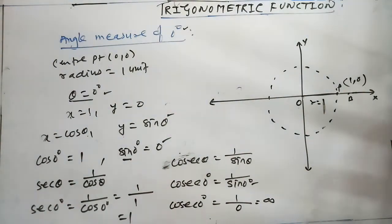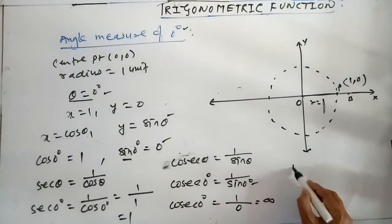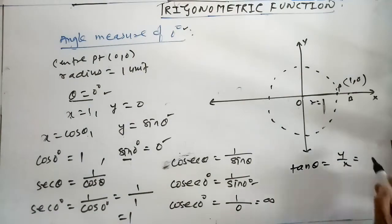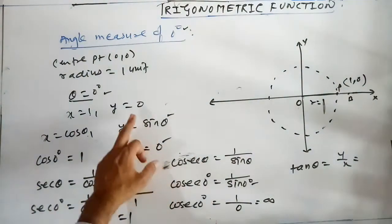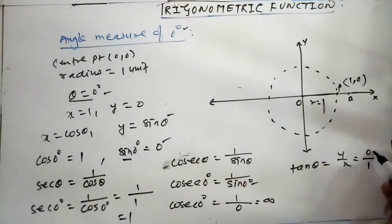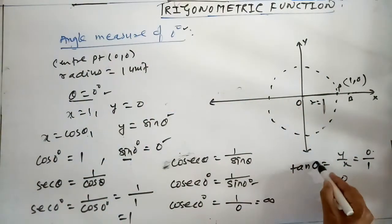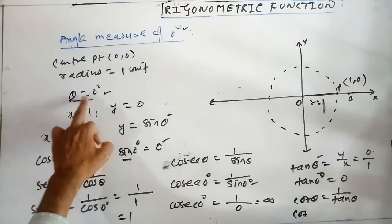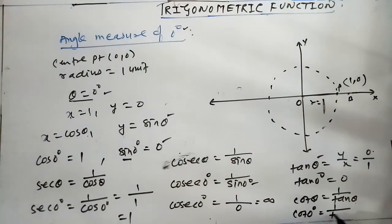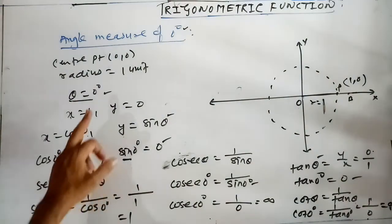tan के लिए: tan θ = y/x। y = 0 और x = 1, so tan 0° = 0/1 = 0. tan का reciprocal cot होता है: cot θ = 1 / tan θ। tan 0° = 0, so cot 0° = 1/0 = infinity। इस तरह standard unit circle construct करके 0 degree पर सभी trigonometric values निकाल सकते हैं।